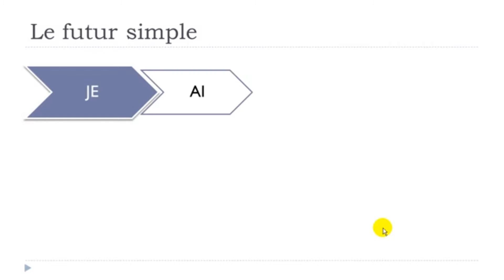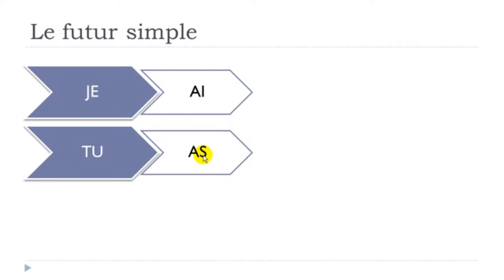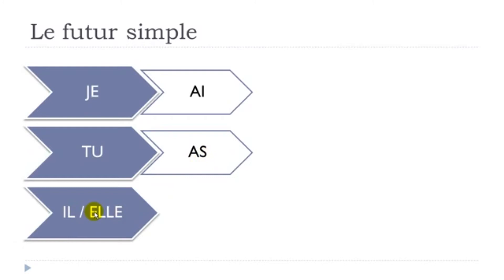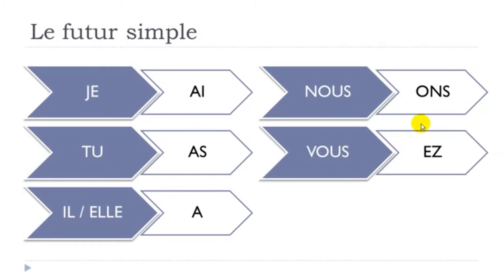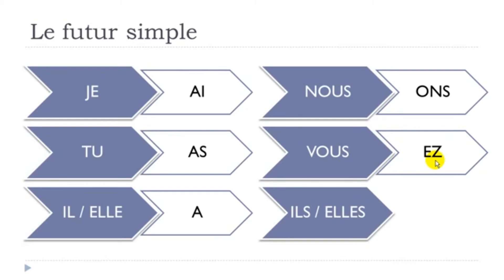The ending for 'je' is AI, pronounced 'A' (open A). The ending for 'tu' is AS — you don't pronounce the S, so you say 'A'. The ending for 'il/elle' is A. The ending for 'nous' is ONS — you don't pronounce the final S, you get the nasal ON sound. The ending for 'vous' is EZ, pronounced 'E'. And the ending for 'ils/elles' is ONT — you don't pronounce the final T, so you get the nasal ON.